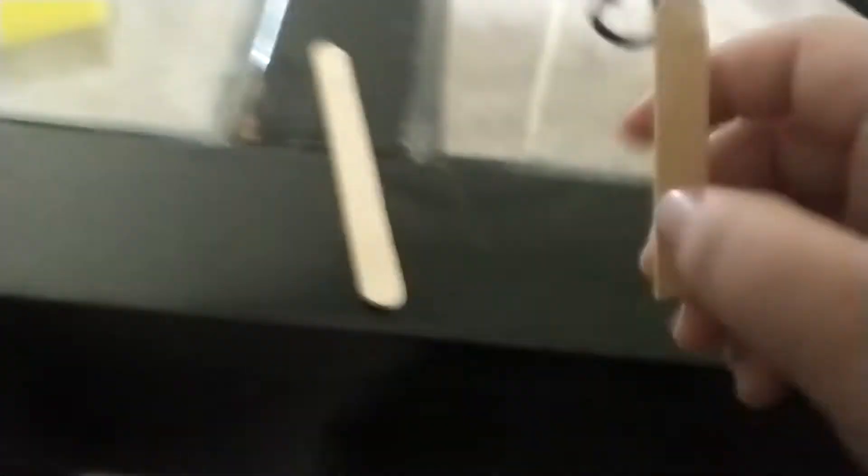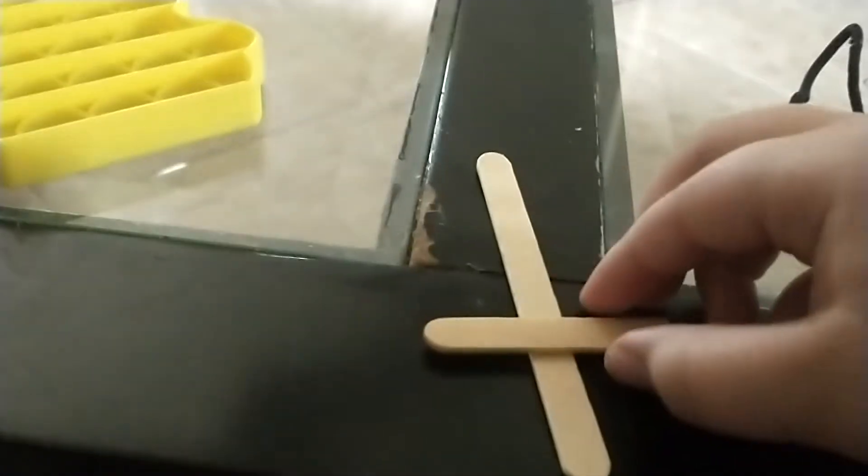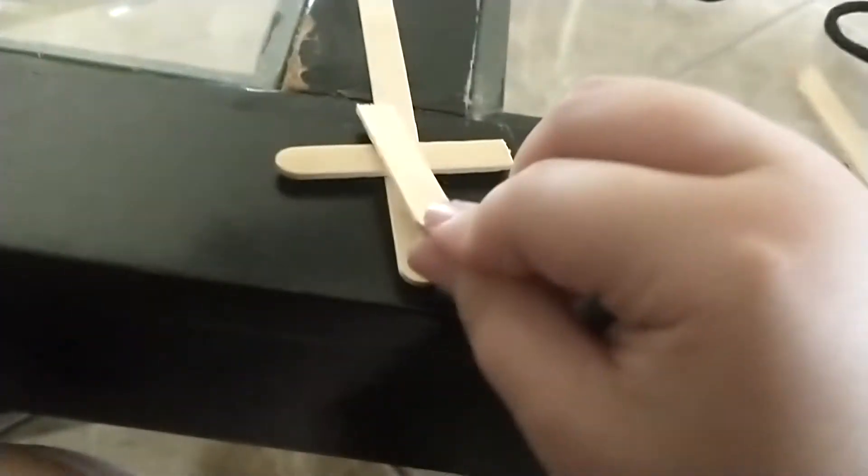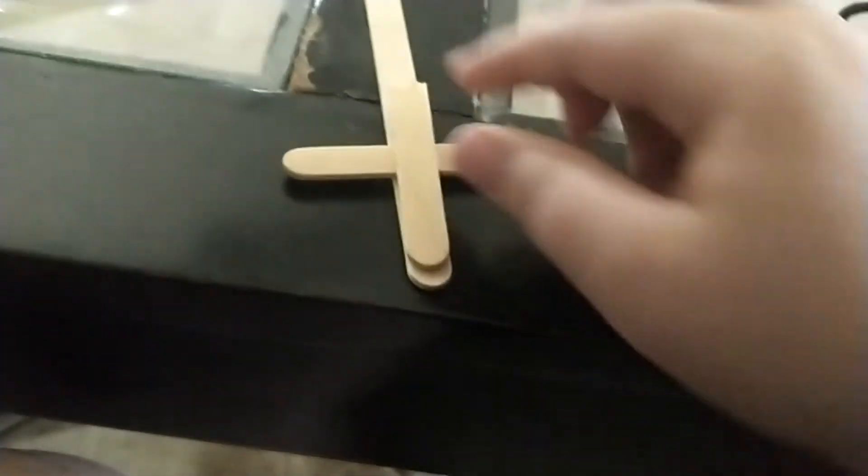So first you're going to get a big one, then you get this one. Put it around right here, so it could look like that. Then you get another one, put it right here in the middle.